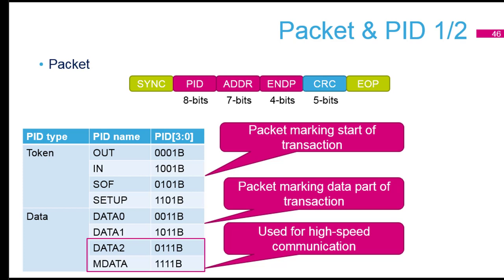Then we have the data packets. When we get a data packet, we have two kinds: DATA0 and DATA1. We are just sending or receiving data — putting data on the bus or reading data from it. On some traffic, we always send first a DATA0, then a DATA1, then DATA0, then DATA1. We toggle this flag to ensure we don't miss a frame. If you see DATA0 arrive twice, you know there is a problem and a DATA1 was missed. For high-speed communication, there are additional types — DATA2 and MDATA — but those won't be covered here.